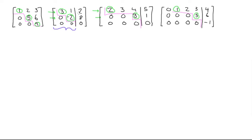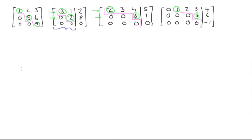Another great reason to identify these types of matrices is that you're able to use back substitution if you go back to the system of linear equations. Let's work through an example. We'll use the matrix with 3, 1, 2 in the first row, 0, negative 2, 8 in the second row, and 0, 0, 0 in the third row.